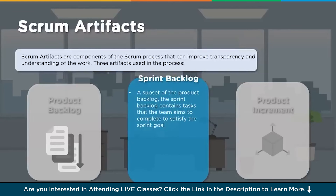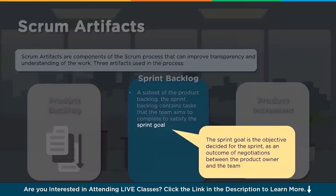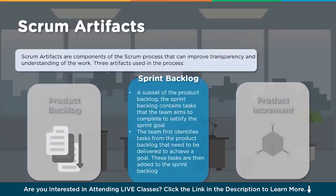The sprint backlog contains the tasks the team aims to complete to satisfy the sprint goal. The sprint goal is the objective decided for the sprint as an outcome of negotiation between the product owner and the team - what can be delivered, how long it takes, effort, time, and costs are all discussed and agreed. Once agreed, the team identifies tasks from the product backlog that need to be delivered to achieve the goal, and these tasks are added to the sprint backlog.